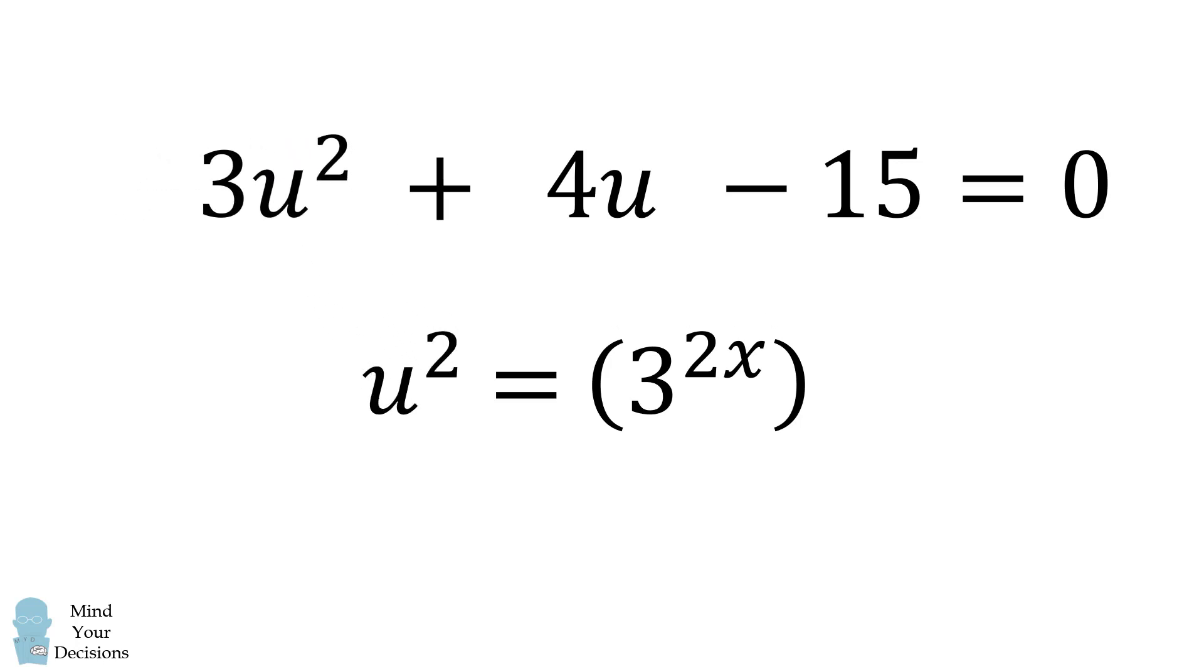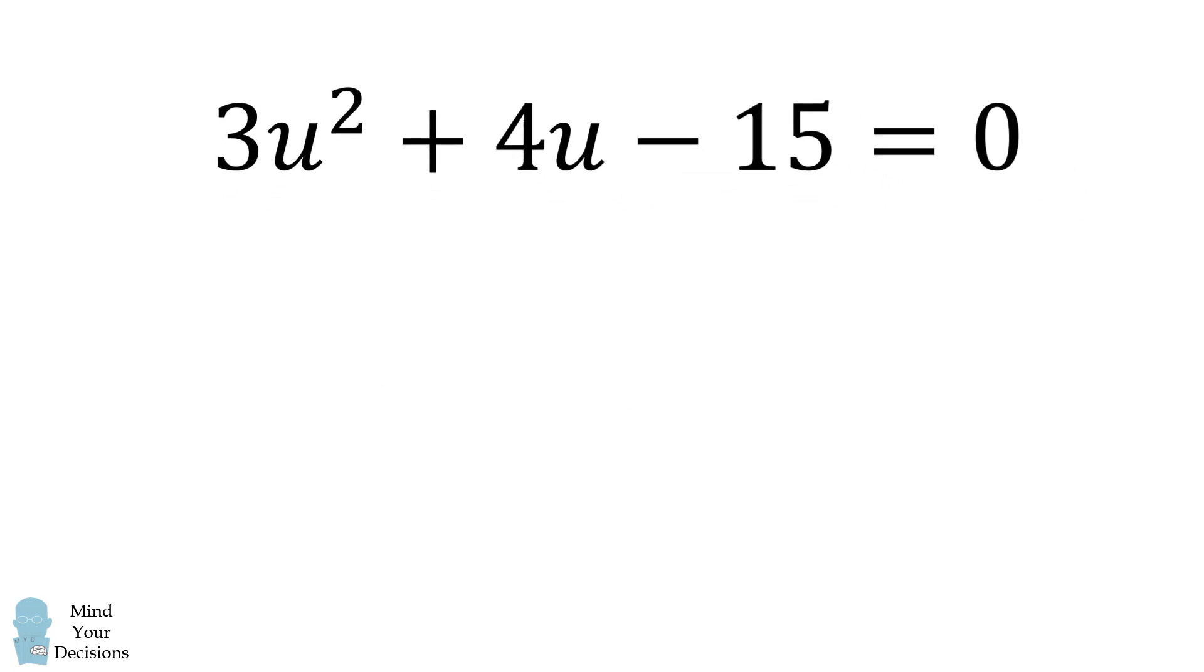The problem now reduces to a quadratic equation in u. 3u squared plus 4u minus 15 is equal to 0. You can solve this with the quadratic formula, or we can try our luck with factoring. As luck would have it, we can factor this equation pretty easily. It will be equal to 3u minus 5 multiplied by u plus 3.